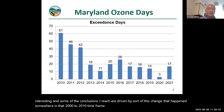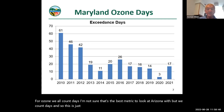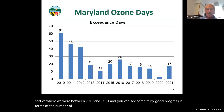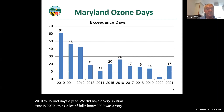For ozone, we count days — this is a graph showing, using the current eight-hour standard, where we were between 2010 and 2021. You can see fairly good progress in terms of the number of days, and we are sort of in a plateau right now with 10 to 15 bad days a year. We did have a very unusual year in 2020 — only three days where we went above the ozone standard.